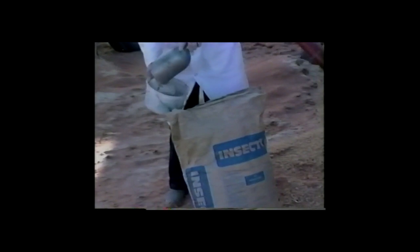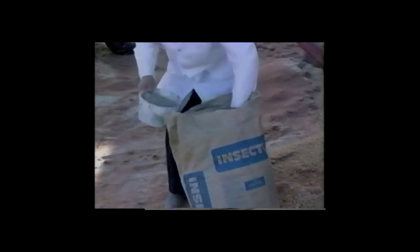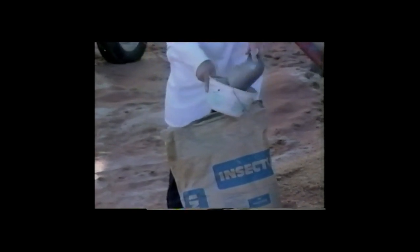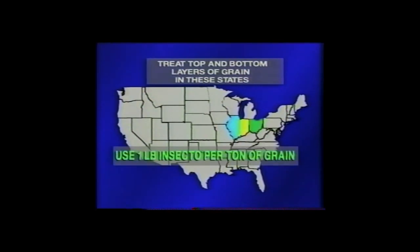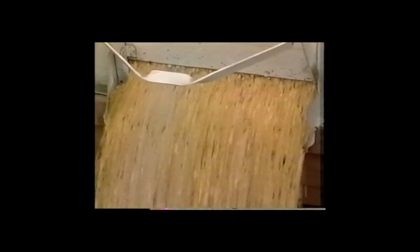Or by using an atomizer duster as illustrated. About 2 pounds of Insecto will treat a 7,000 bushel bin, and 2 pounds of Insecto fits nicely into a 5-quart ice cream bucket. In some states, extension entomologists recommend that you treat the bottom 2 feet of grain with Insecto to prevent invasion from the bottom — at 1 pound of Insecto per ton of grain. Otherwise, wait until the bin is almost full and apply Insecto at a rate of 1 pound per ton to the top 2 feet of grain, and top-dress with Insecto at a rate of 4 pounds per 1,000 square feet of surface area.